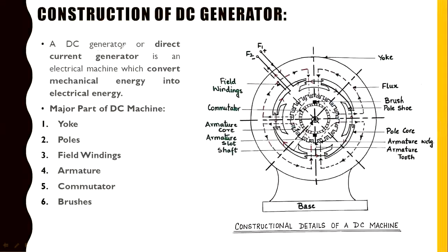A DC generator is an electrical machine which converts mechanical energy into electrical energy, and it has the following major parts. Here we can see the cross-sectional view of the DC machine. I'm calling it a DC machine because the construction of a DC generator and a DC motor is the same — the same construction features are utilized for both types. The outermost cover of the machine is called the yoke.